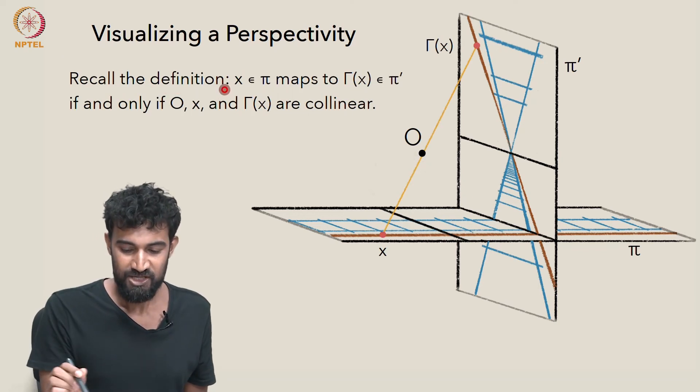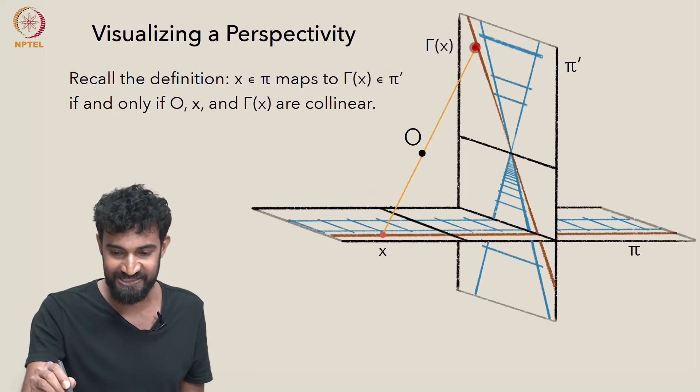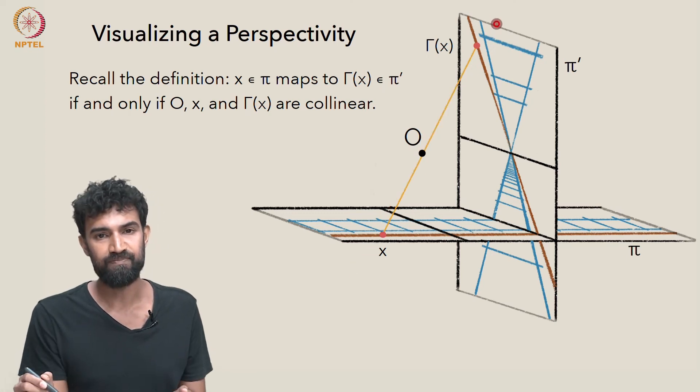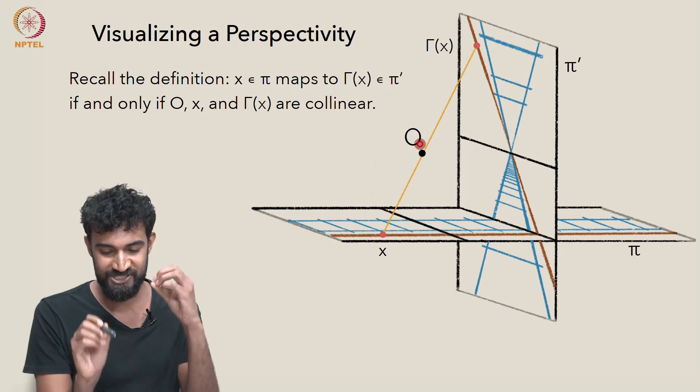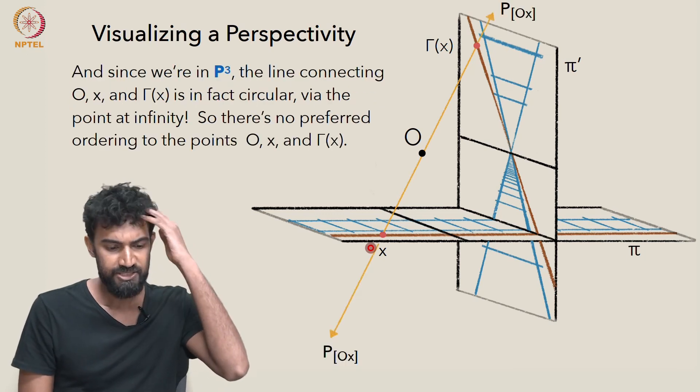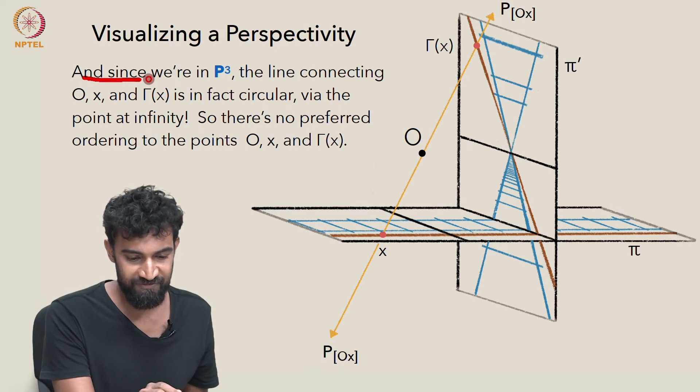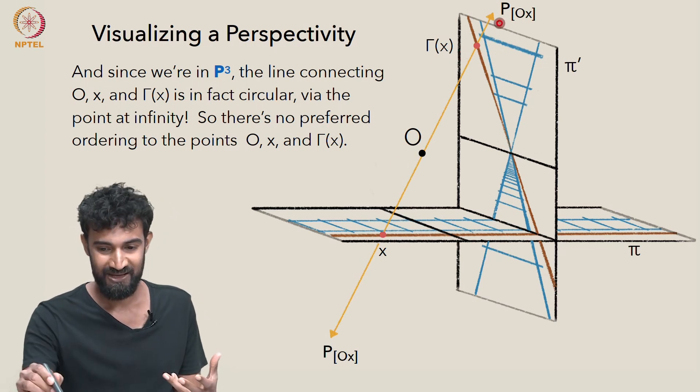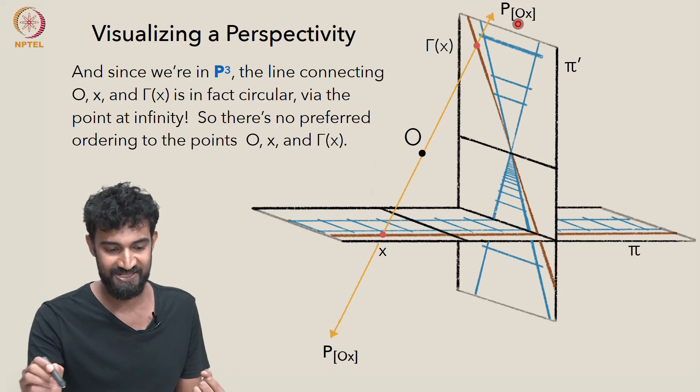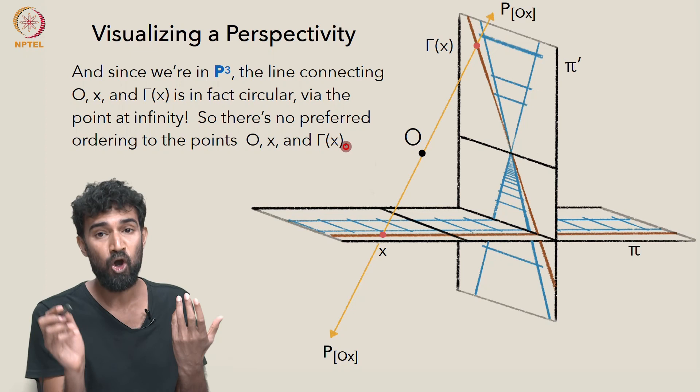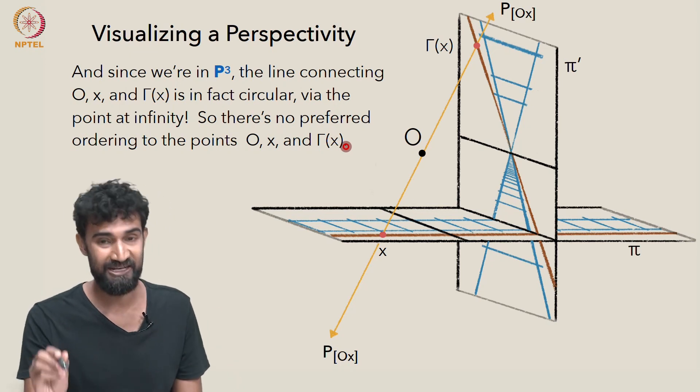More specifically, let's just recall the definition. So a point x maps to gamma of x, x in pi maps to gamma of x in pi prime, if and only if the points O, x, and gamma of x are collinear. There's nothing there about a light ray from O first hitting x and then hitting gamma of x, or first hitting gamma of x and then hitting x. That doesn't really come into play. So in fact, since we're in P3, this line which connects O, x, and gamma of x is actually circular. It's going to have a point at infinity, P, O, x. And via that point at infinity, it's actually kind of circular. So there's really no preferred or natural ordering to the points O, x, and gamma of x. We can take them in any order, depending on where we start and which direction we go.